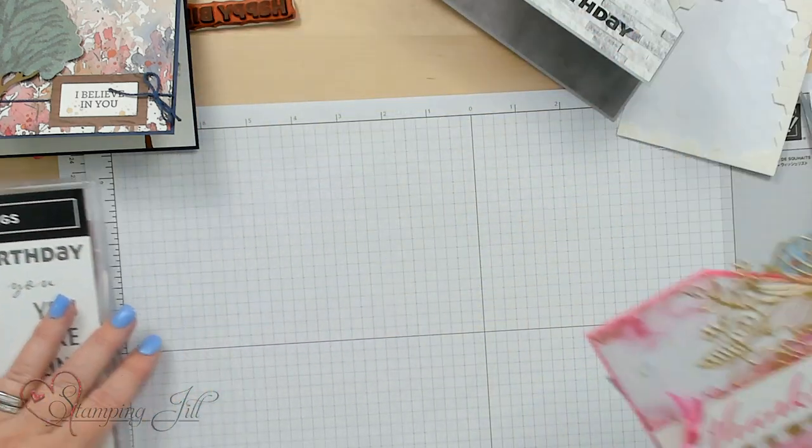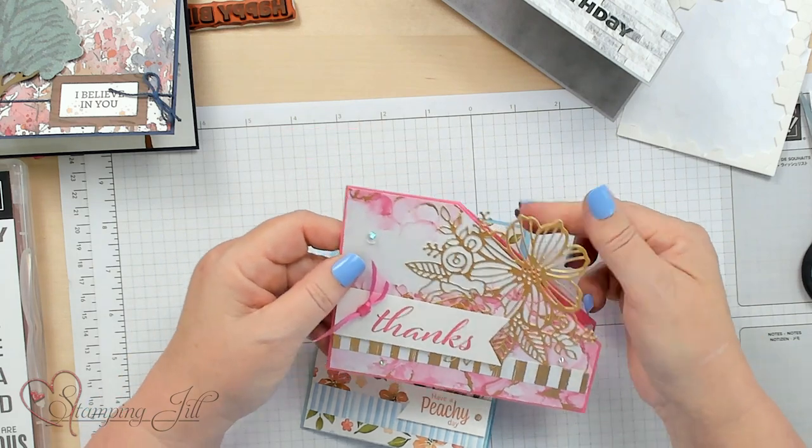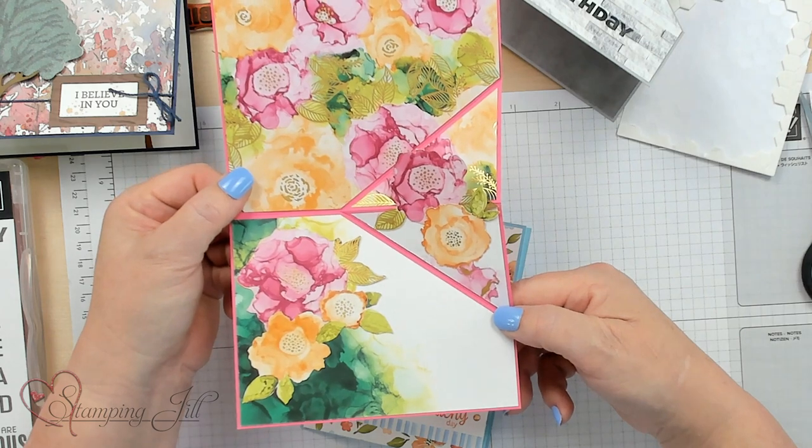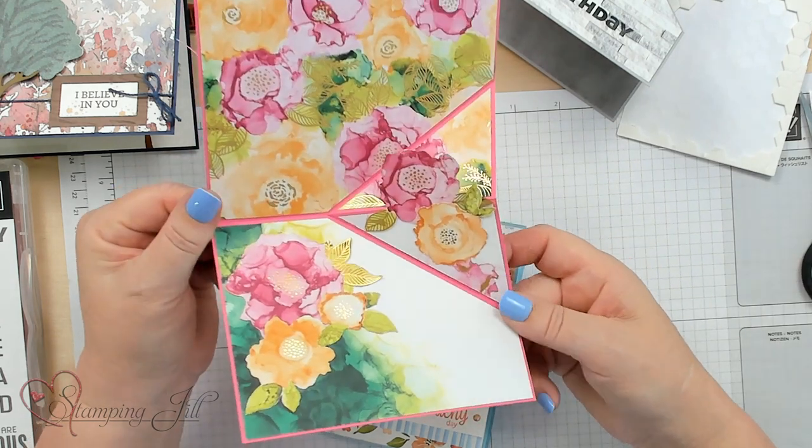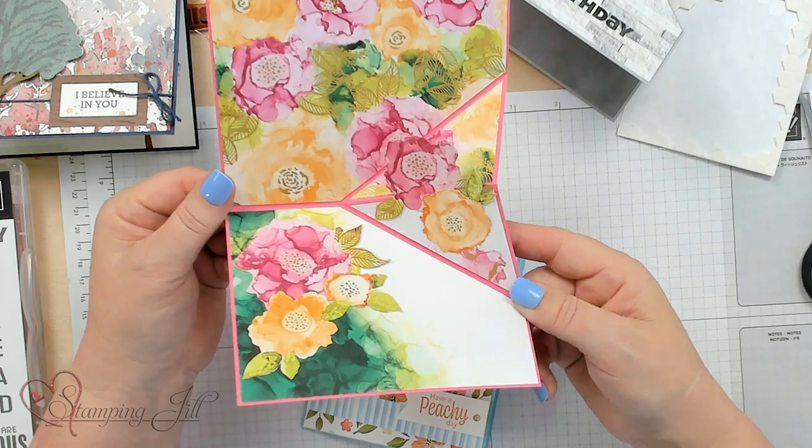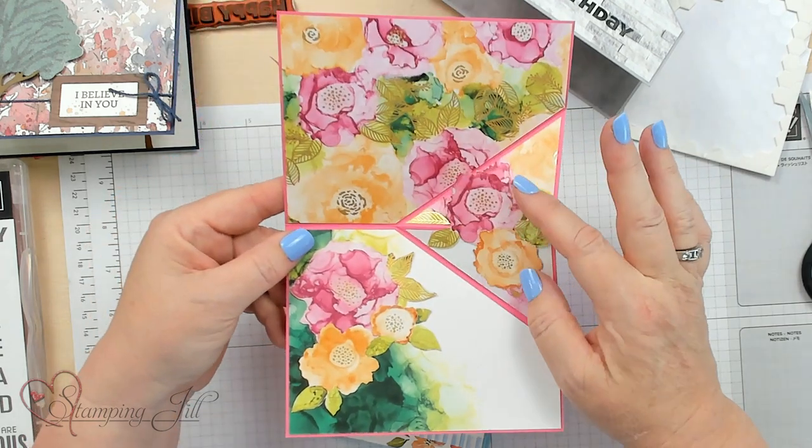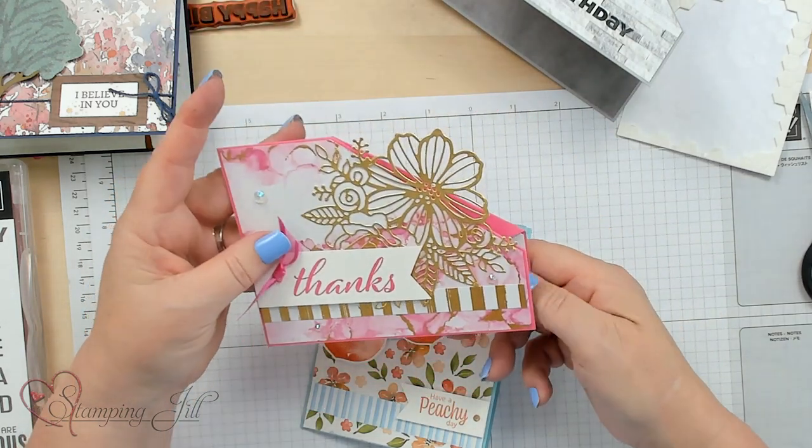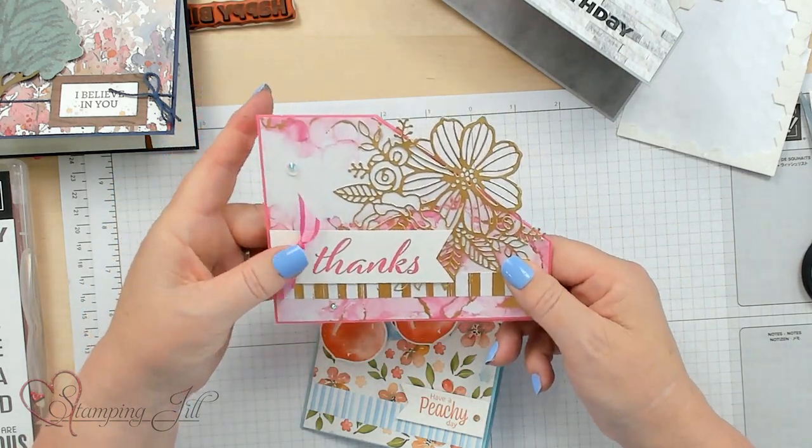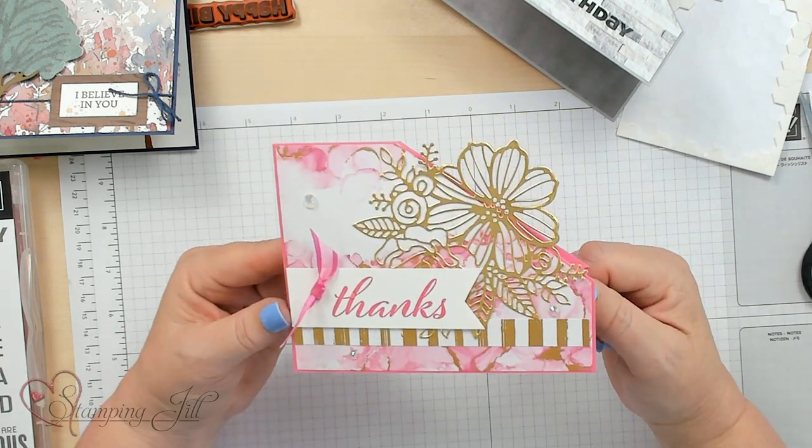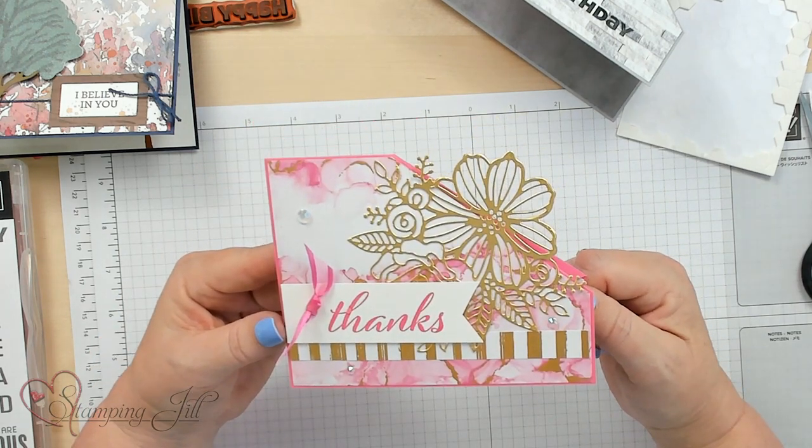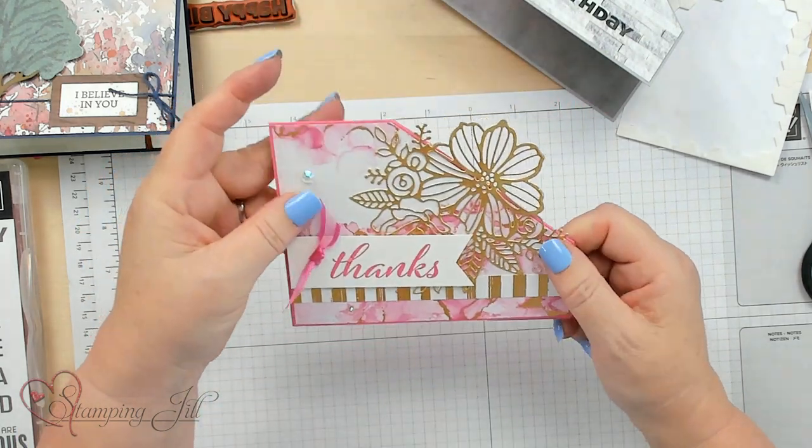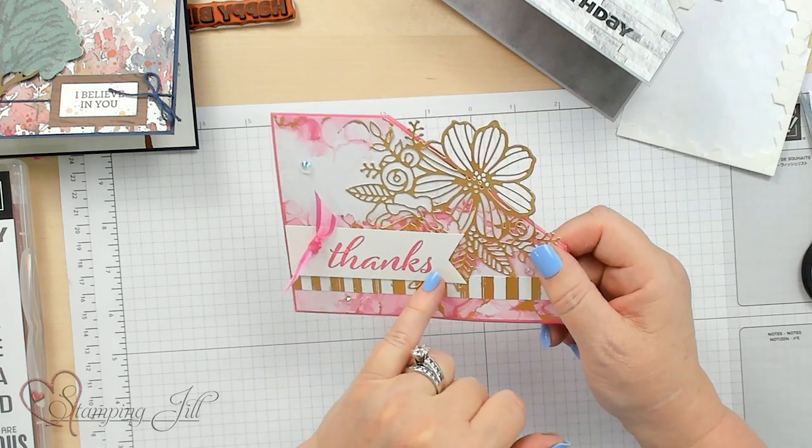Here's a couple that are not masculine that I went ahead and used with these stamp sets and designer series paper. This designer series paper has the gold foil in it so it's a specialty paper. I went ahead and die cut these out or fussy cut them to show you a different look. The designer series paper is called Expressions of Ink and it's gorgeous paper. I used the stamp set that coordinated with it and used the Thanks.